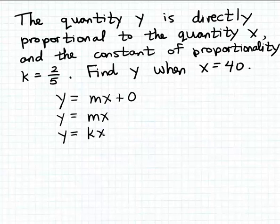Direct proportion functions have very simple formulas: the output is the constant of proportionality times the input variable x. In this example, we're told that k = 2/5. So we can fill that into our formula, giving us y = (2/5)x.